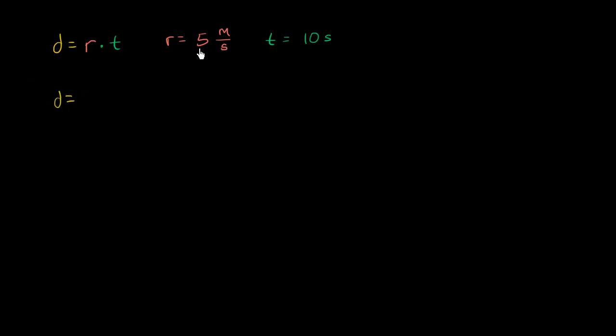We'd say, well, distance is equal to our rate, five meters per second, times our time, which is 10 seconds. And what's neat here is we can treat the units, as I just said, like algebraic constructs, kind of like variables. So this would be equal to, well, multiplication, it doesn't matter what order we multiply in, so we can change the order. This is the same thing as five times 10, times meters per second, times seconds.